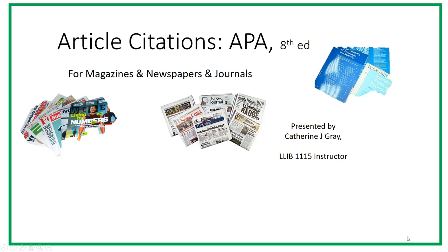Articles are the most common type of source used in college-level research, whether the articles are from journals, magazines, or newspapers. Website citations are often from online journals, online magazines, and online newspapers, but we will learn to cite websites later in the semester. This video focuses on developing citations based on the 8th edition of the APA Manual.